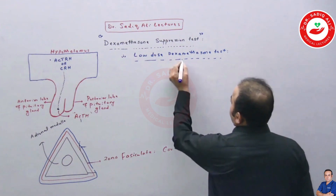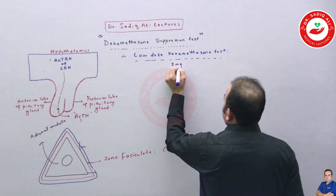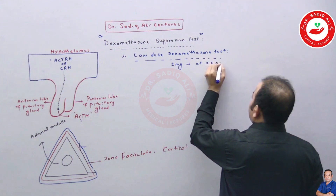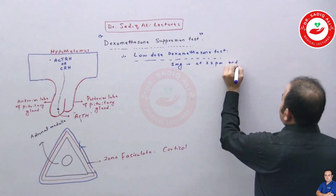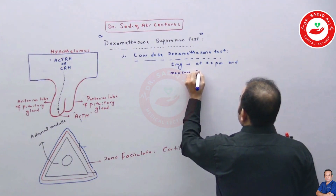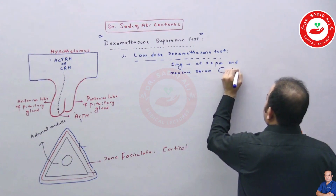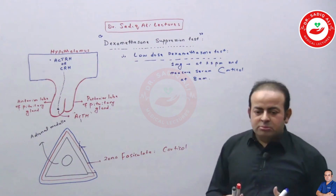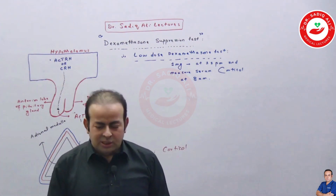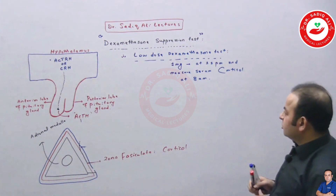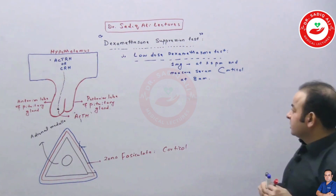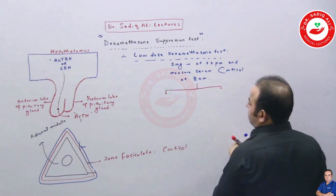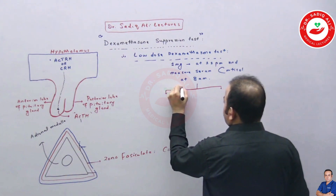For the low dose dexamethasone test, we give one milligram of dexamethasone at 11 PM during the night. Then we measure serum cortisol and ACTH at 8 AM early in the morning. This is what is meant by the low dose dexamethasone suppression test.